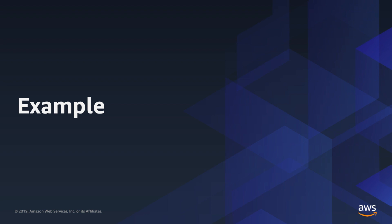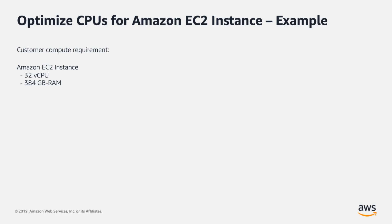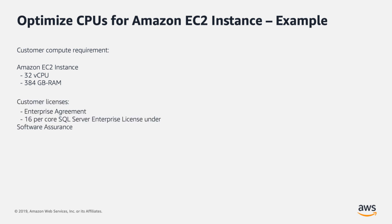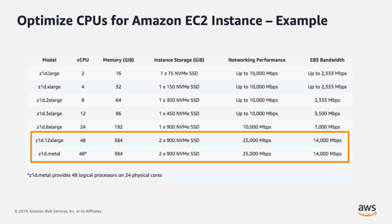Consider this example: a customer is looking for an Amazon EC2 instance with 32 vCPUs and 384 gigabytes of RAM. The customer has a Microsoft Enterprise Agreement with 16 SQL Server Enterprise per-core licenses. License mobility applies to SQL Server covered by Active Microsoft Software Assurance. The customer identifies the Amazon EC2 instance type Z1D.12xlarge, which has 48 vCPUs and 384 gigabytes of RAM, as matching the memory requirements — but they only have 16 SQL Server Enterprise licenses capable of licensing 32 vCPUs.